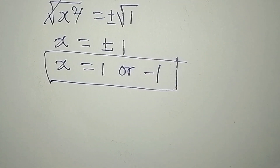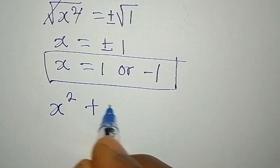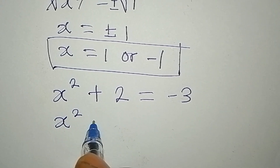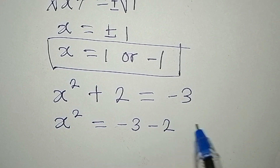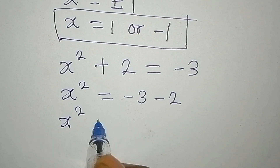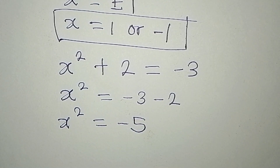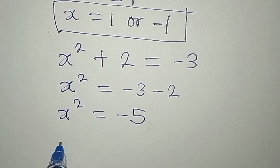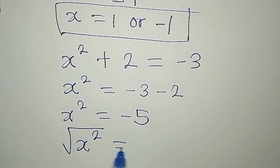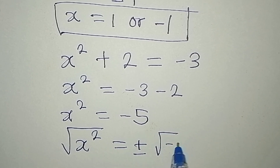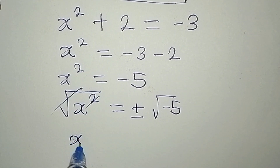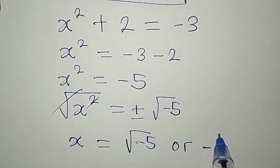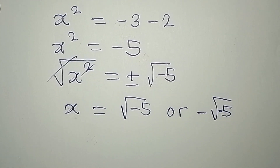Now let's go to the other equation: x squared plus 2 equals negative 3. This means x squared equals negative 3 minus 2, so x squared equals negative 5. We are looking for the value of x, so we take the square root: x equals positive or negative square root of negative 5.